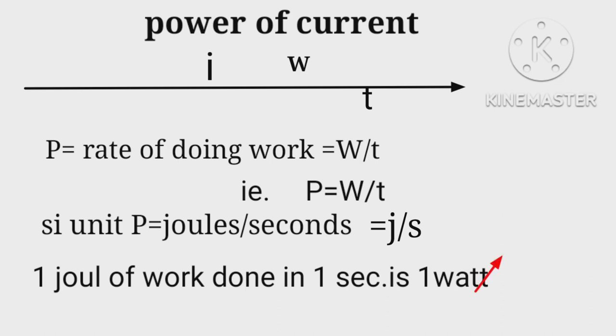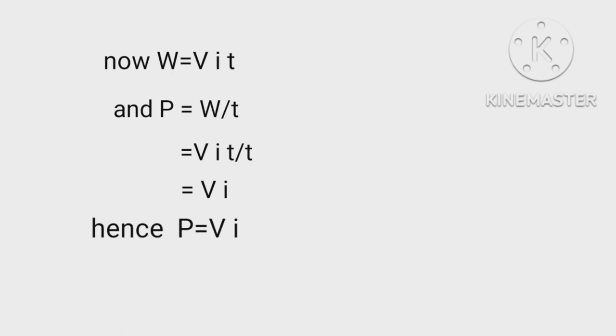Now as we know W equals V i t, and P equals W upon t equals V i t upon t. t cancels, equals V i. Hence P equals V i.